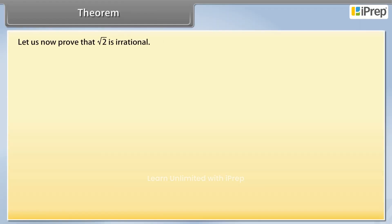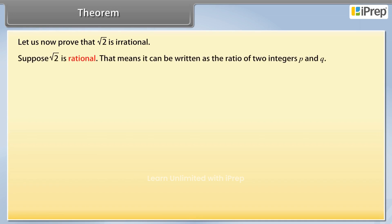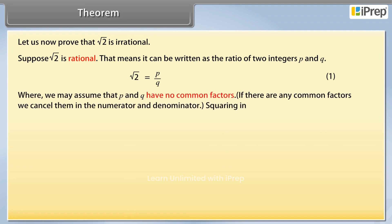Theorem: let us now prove that the square root of 2 is irrational. Suppose square root 2 is rational — that means it can be written as the ratio of two integers P and Q, so square root 2 is equal to P upon Q, which is equation 1, where we may assume that P and Q have no common factors.